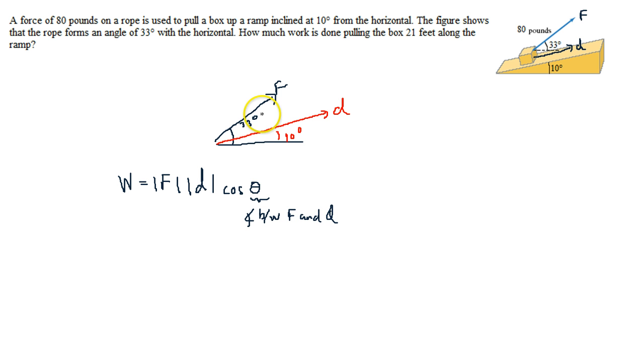The angle between F and D is this angle here, the subtraction, 33 minus 10. So that's 23 degrees. Okay. It's going to move it 21 feet. Feet pounds will be the unit of our force. So we take the 80 pounds times the 21 feet, and the cosine of the theta doesn't have units on it. We have to use a calculator, but it's the cosine of 23 degrees.